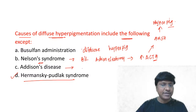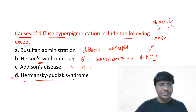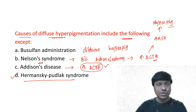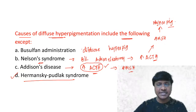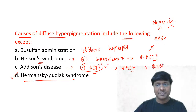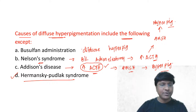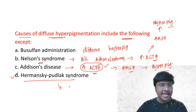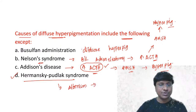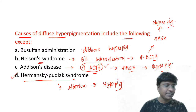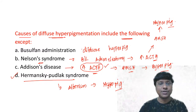In Addison's disease, ACTH levels are increased; when ACTH increases, MSH levels also increase, resulting in hyperpigmentation. However, Hermansky-Pudlak syndrome is a genetic disorder where you have albinism, so in Hermansky-Pudlak syndrome you will have hypopigmentation, not hyperpigmentation. This is a very important point to understand.